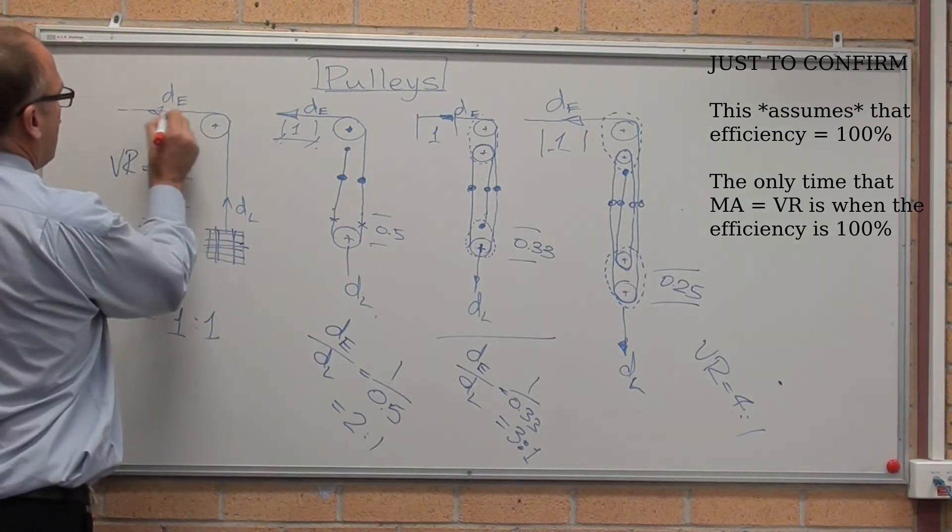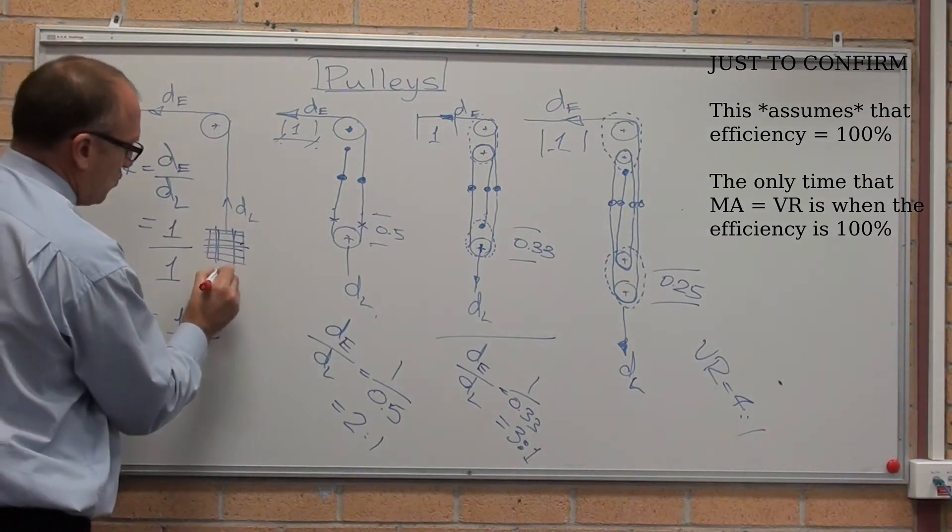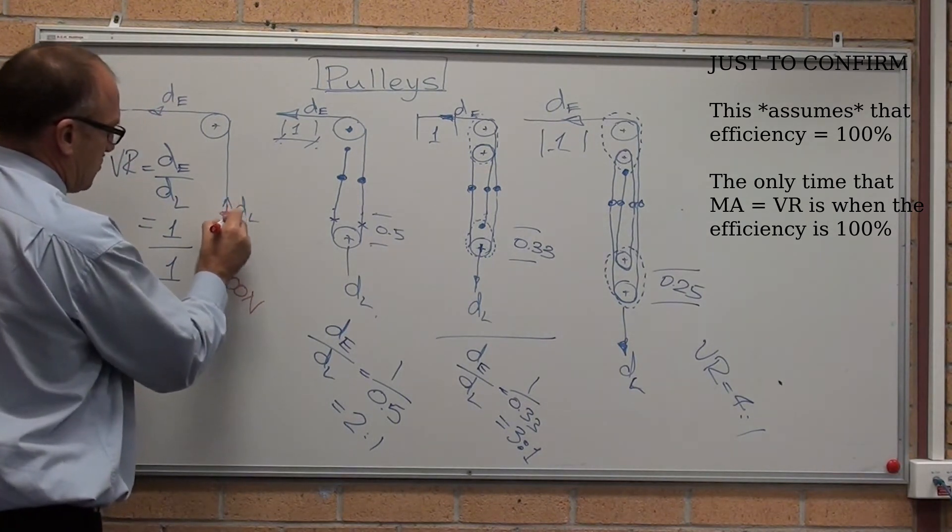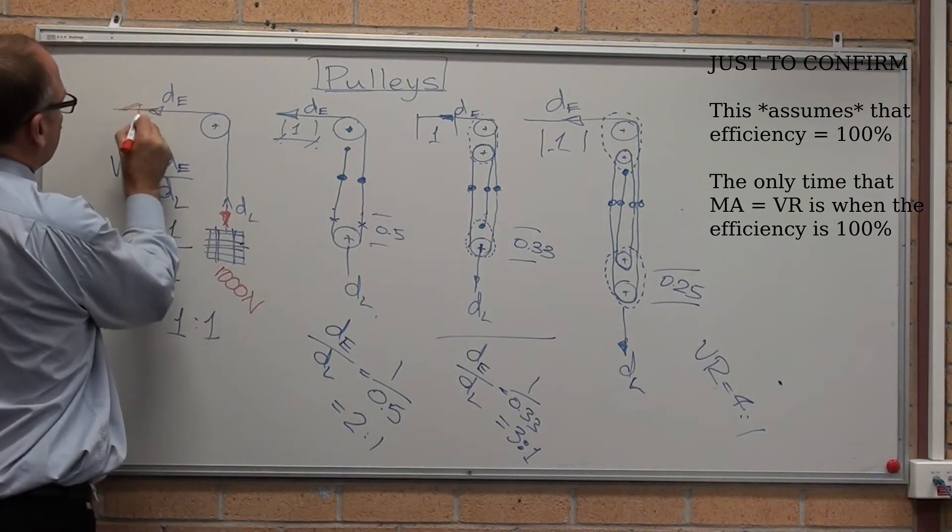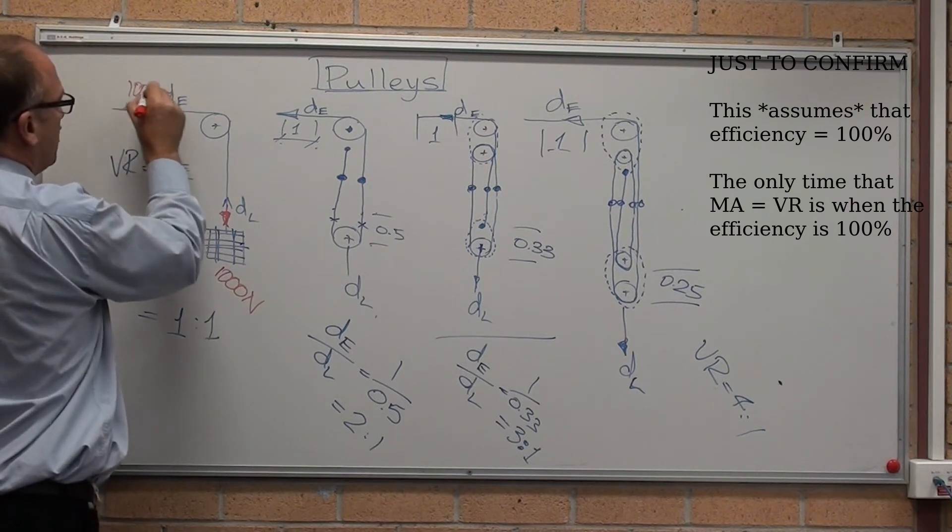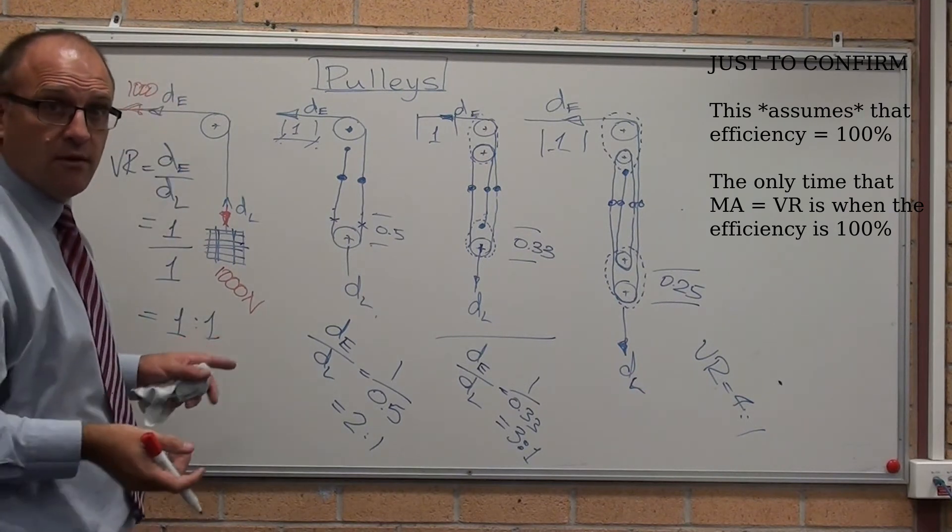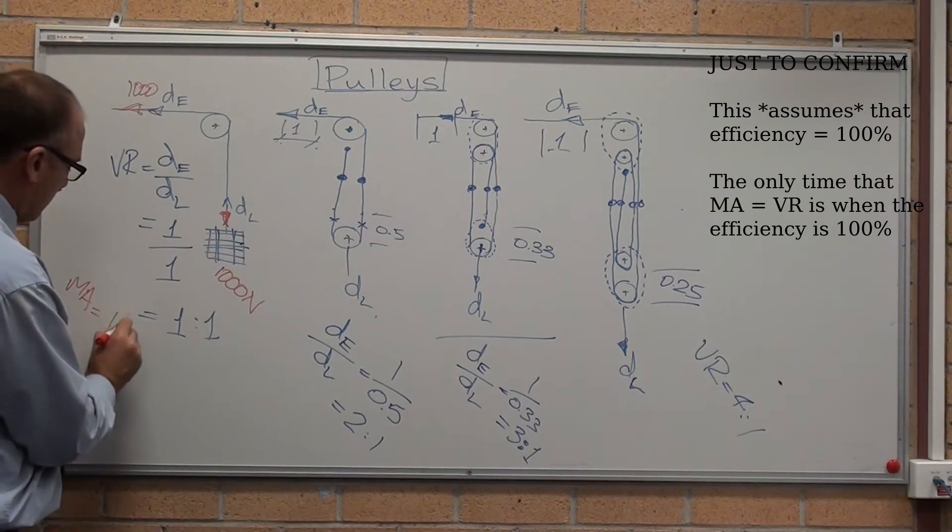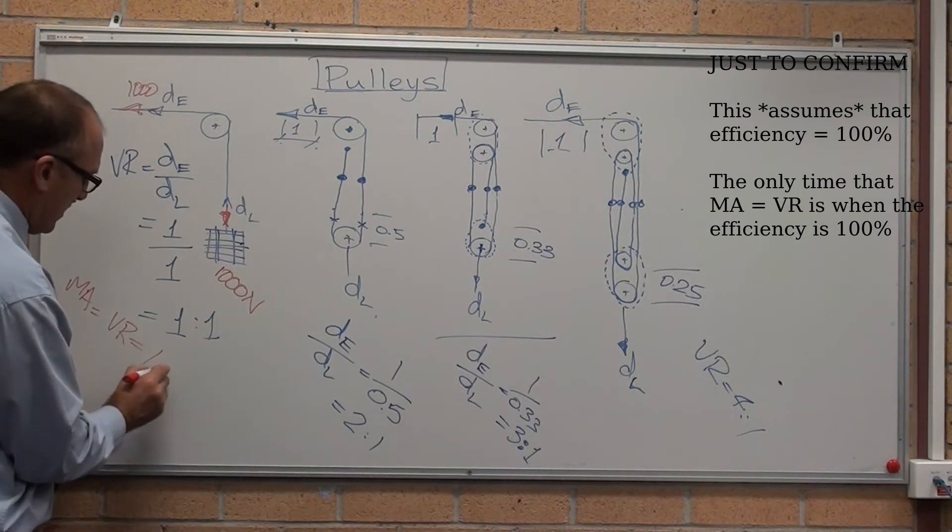If the tension in that, let's say this equals 1,000 newtons, 100 kilograms, that's 1,000 newtons, that's 1,000 newtons as well. Mechanical advantage equals the velocity ratio equals one as to one.